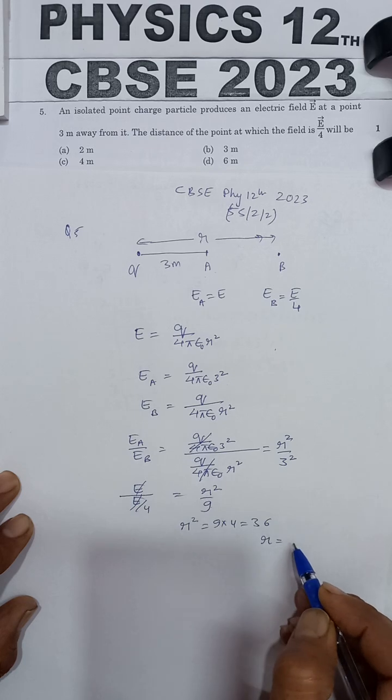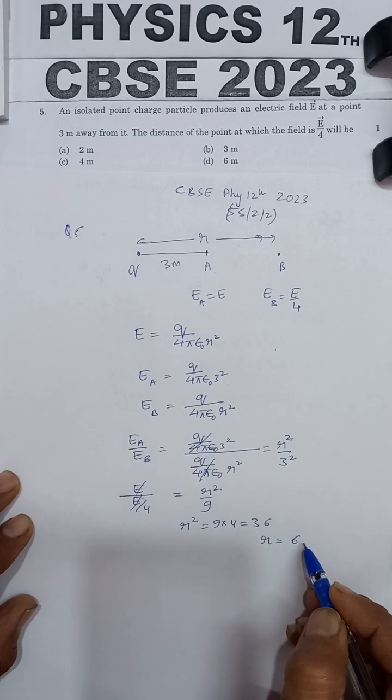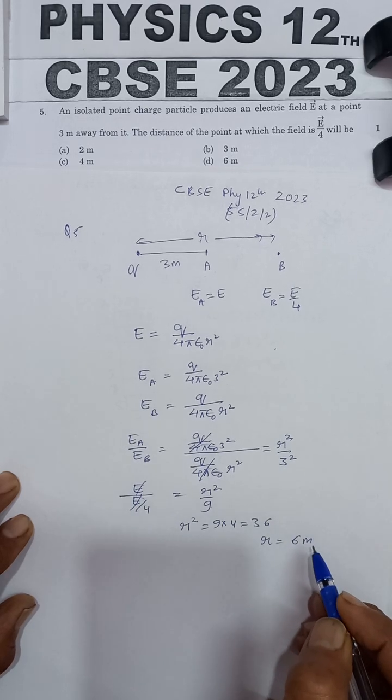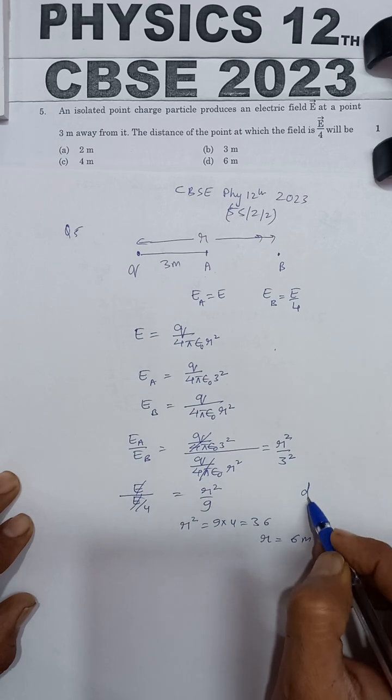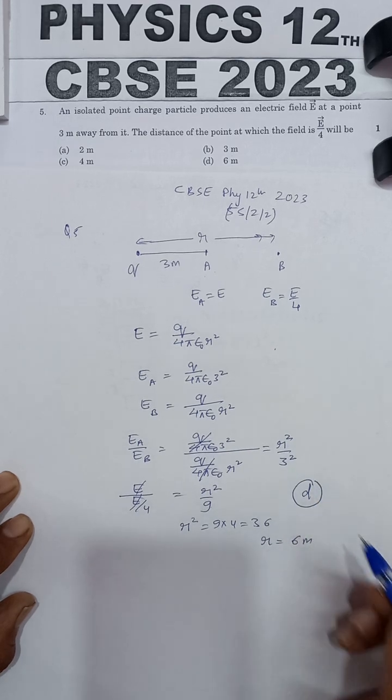Simplifying this, we get r equal to 6 meters, and this is given in option D. So option D is the correct answer.